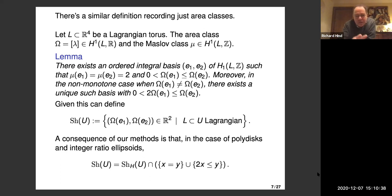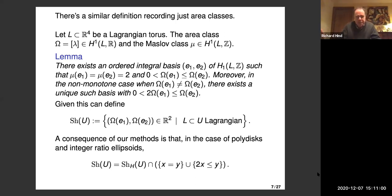You could take any Lagrangian torus and ask which area classes are possible. One way to deal with it: if you have a Lagrangian torus in R⁴, there's essentially a canonical basis for the homology. You can always find a Maslov-2 basis for the homology ordered by area. If it's non-monotone, there's a unique basis so that the area of the first vector is less than half the area of the second vector. The basis isn't unique in the monotone case, but then all the areas are the same anyway.